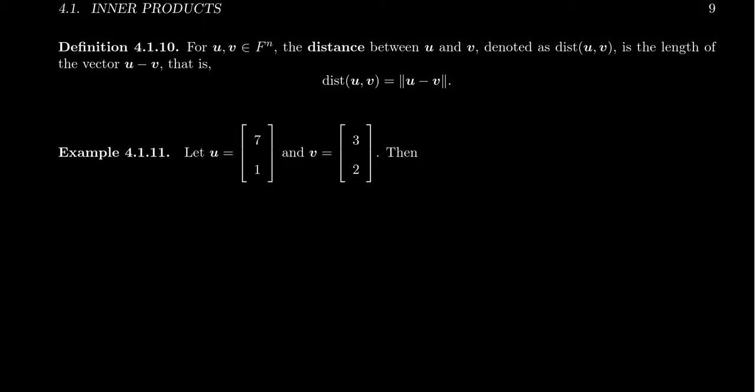Because the idea is the following. If we have two vectors, say u and v, if we think of these as arrows in space, we can position the arrows so that they have a common point. The distance between them, because these vectors are pointing at points, is really just going to be the vector that points from one head to the other.